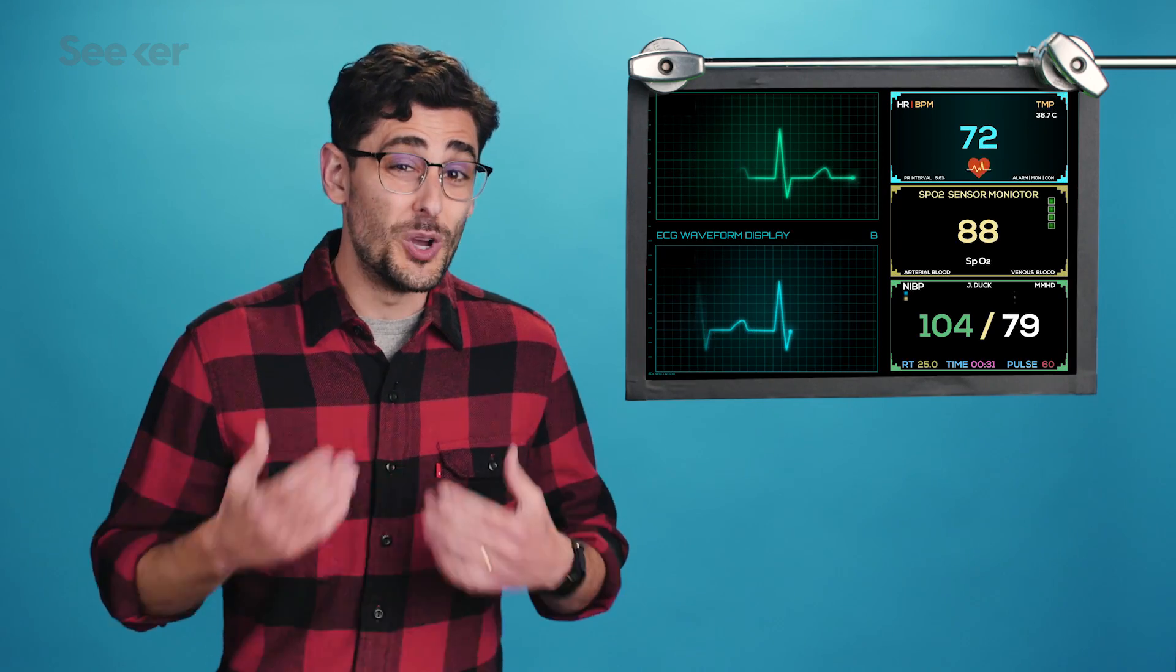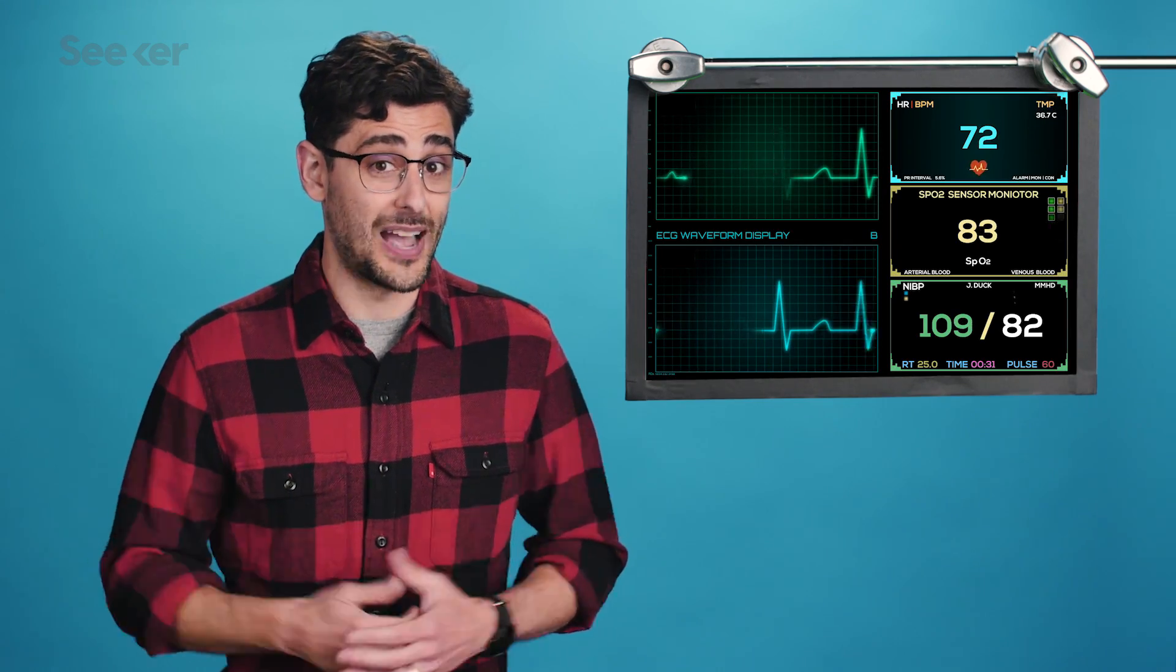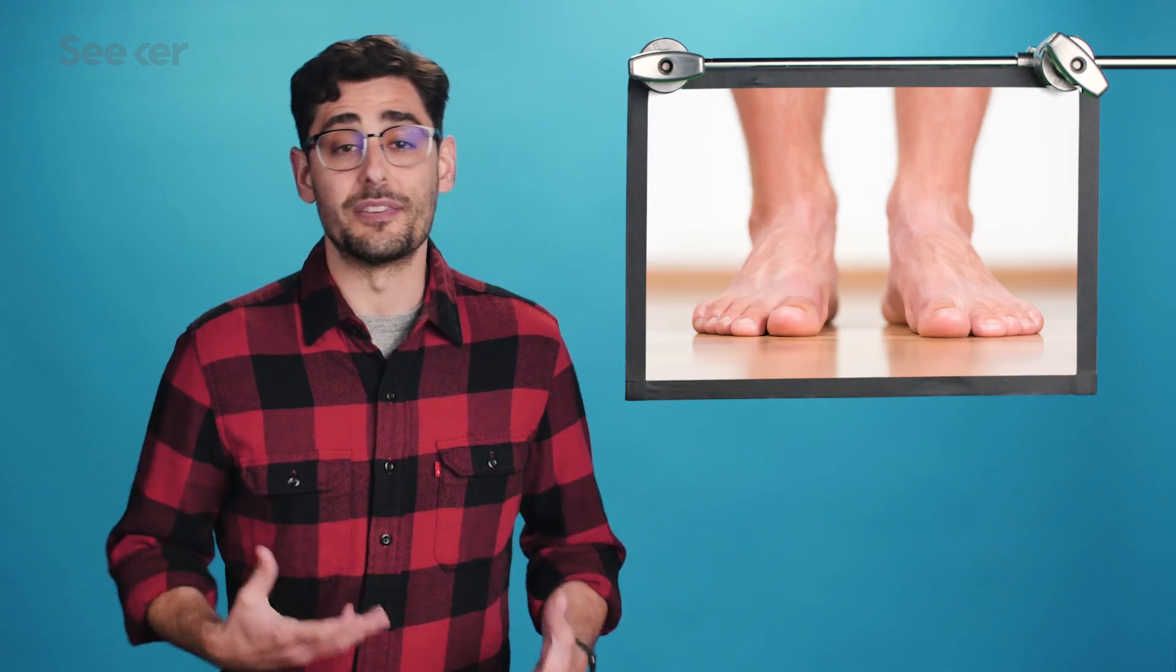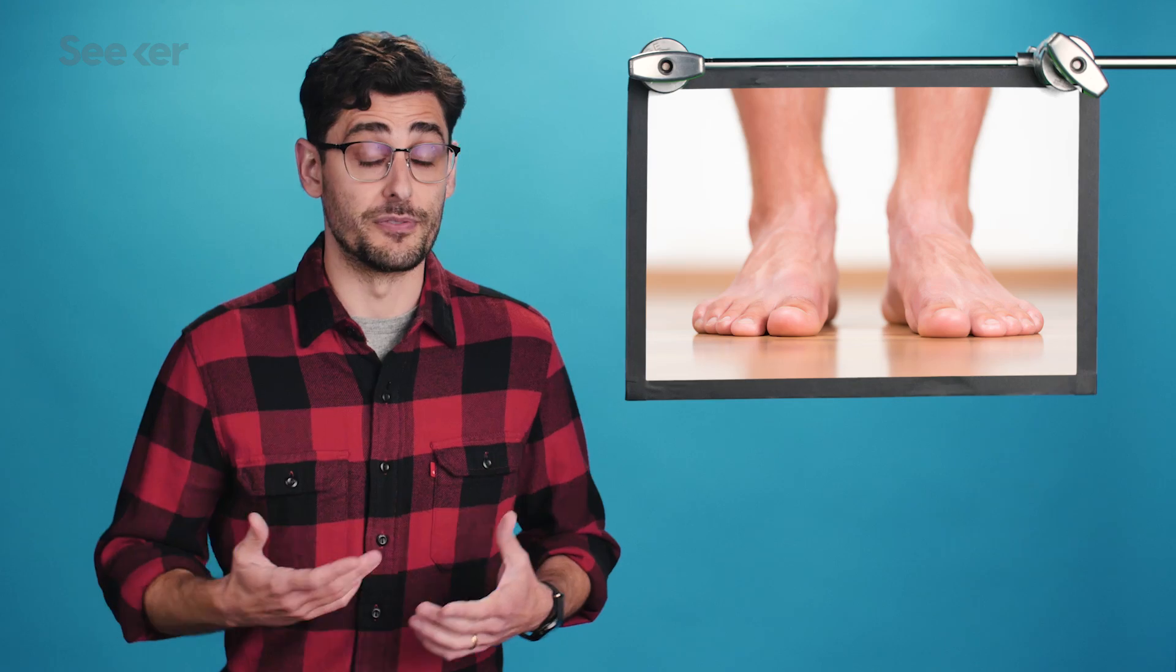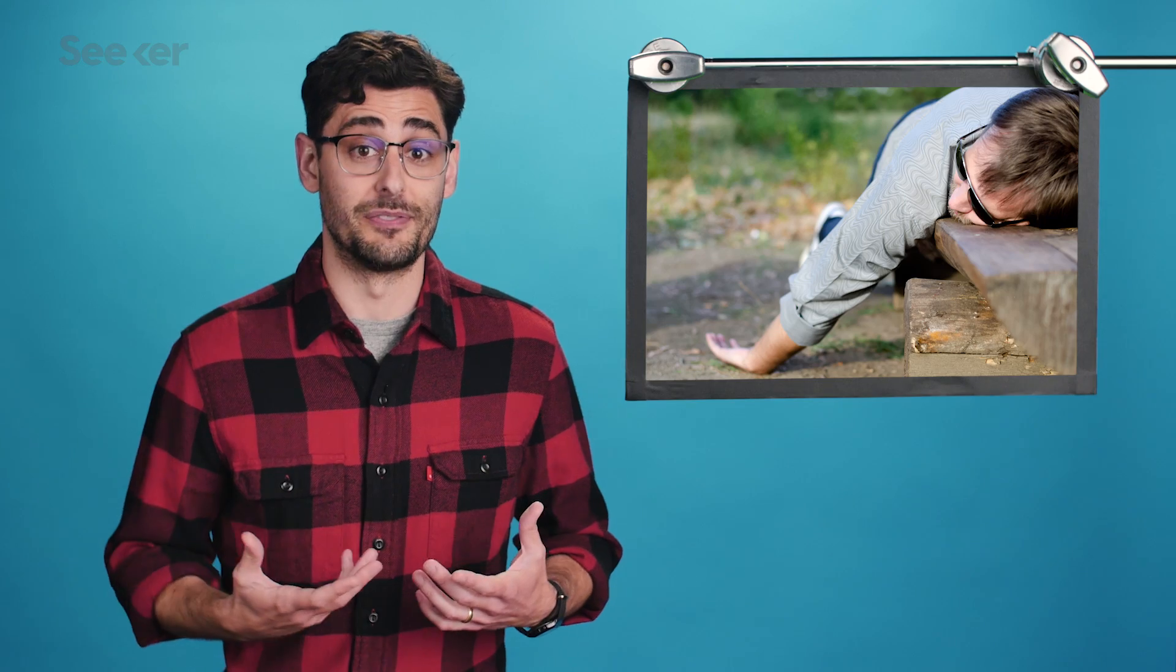There's a certain point at which our bodies can no longer muster the energy needed to pump the blood, which happens around four or five g's. Blood ends up pooling in the feet, and the rest of the body receives such a lack of oxygen that a person first loses vision due to a lack of blood flow to the eyes, and then consciousness altogether when the brain loses enough of its blood flow.